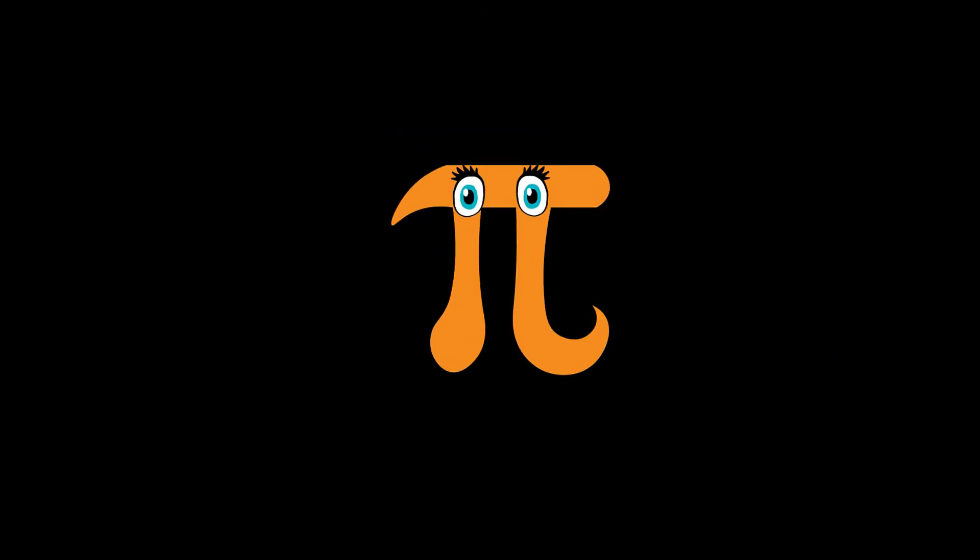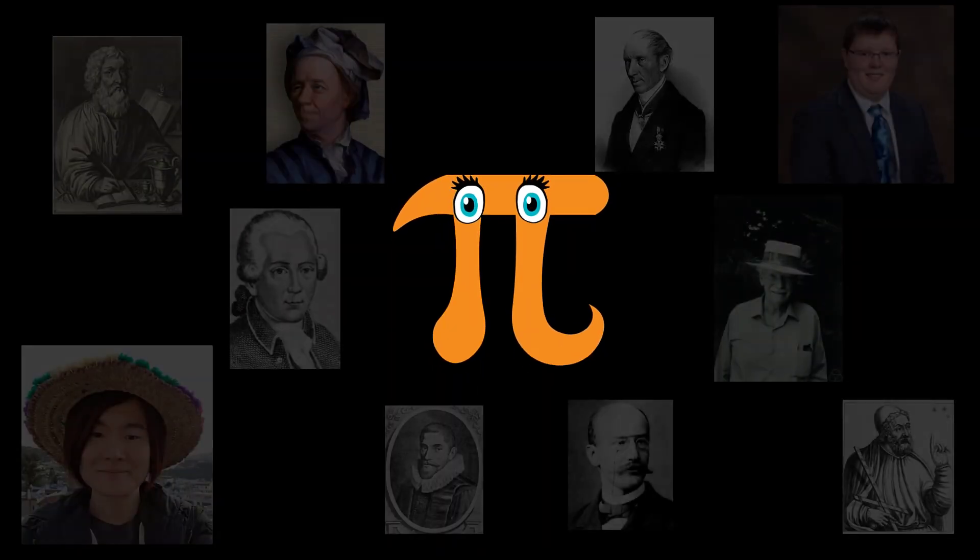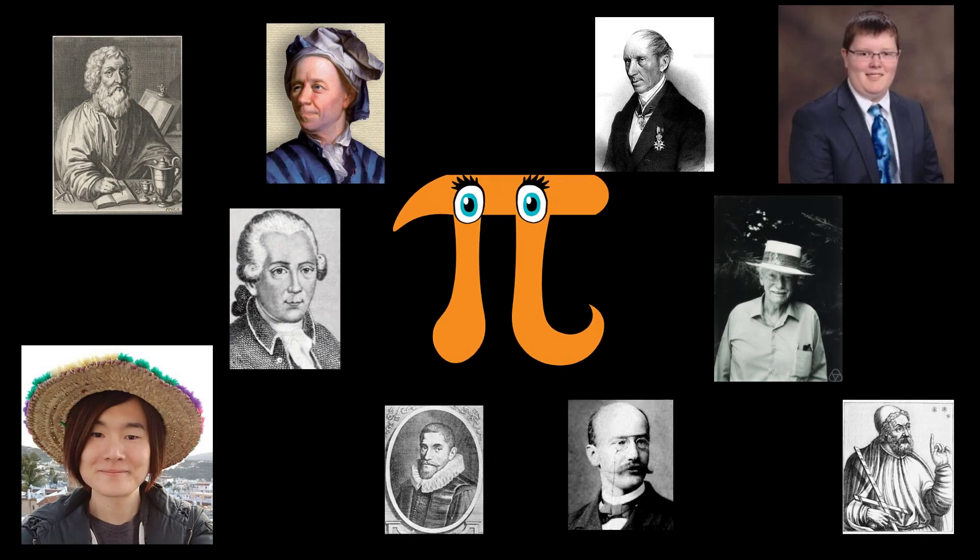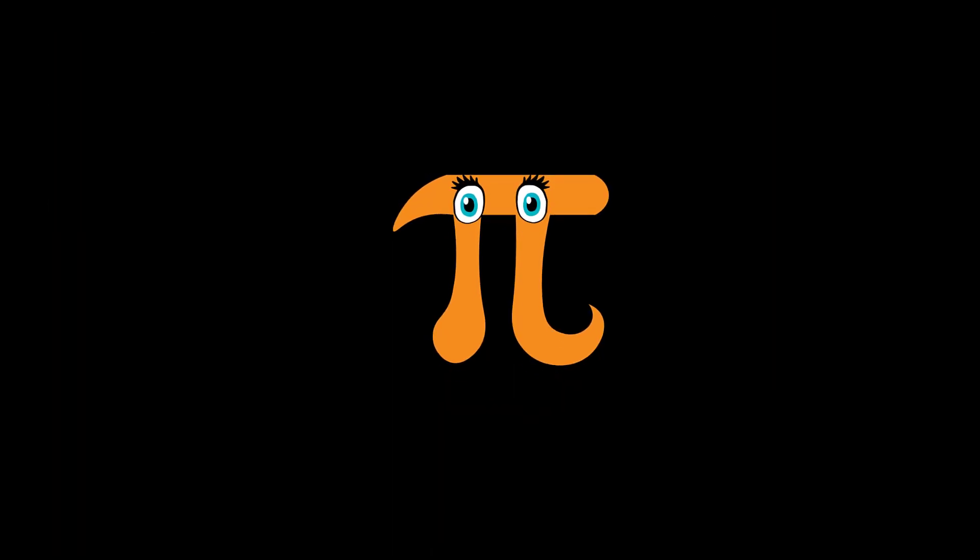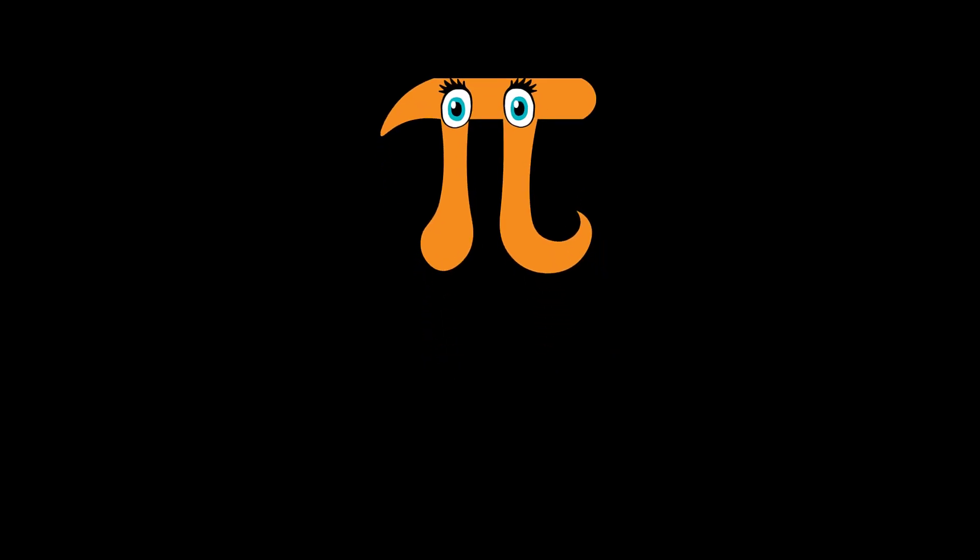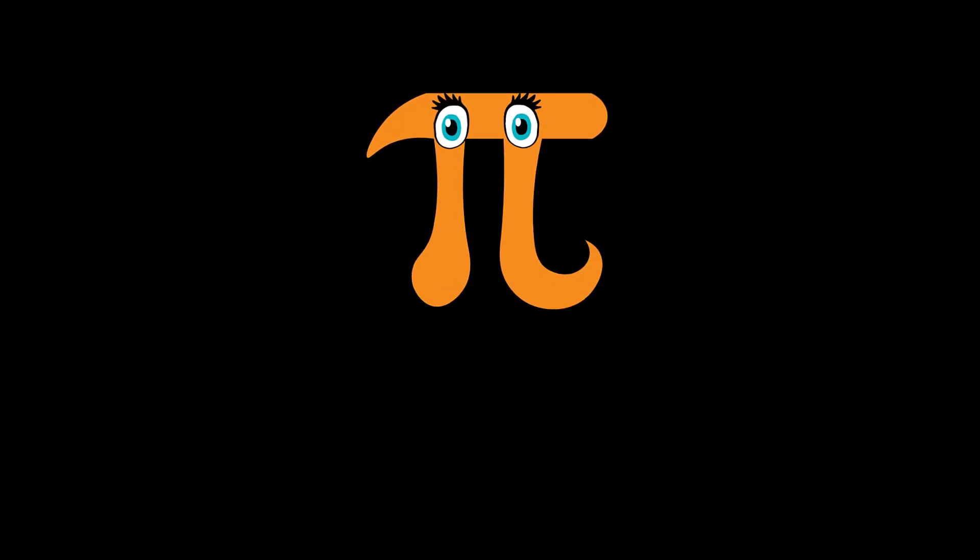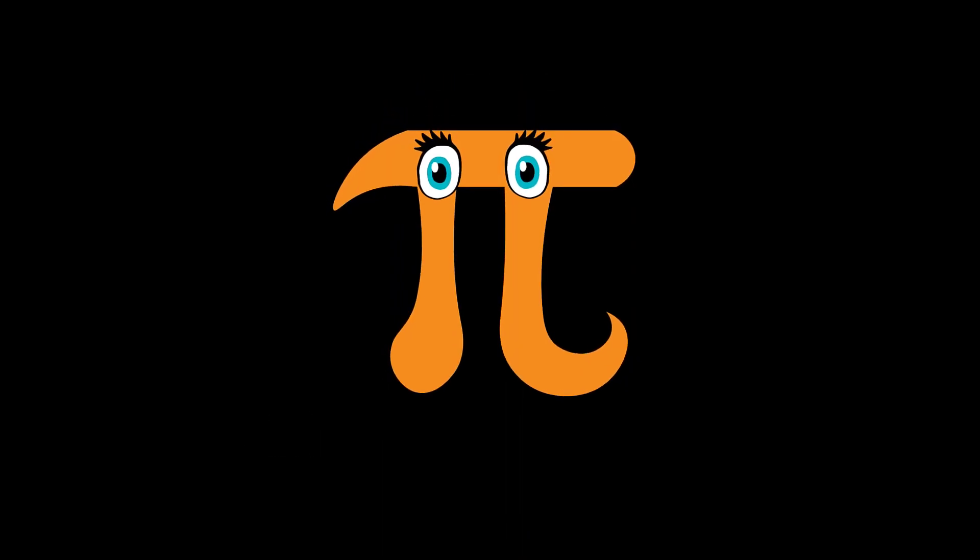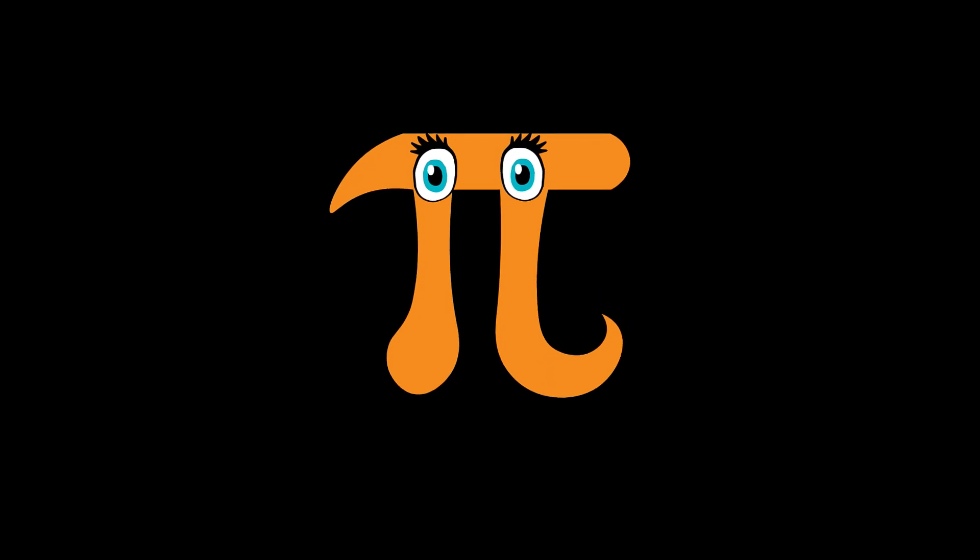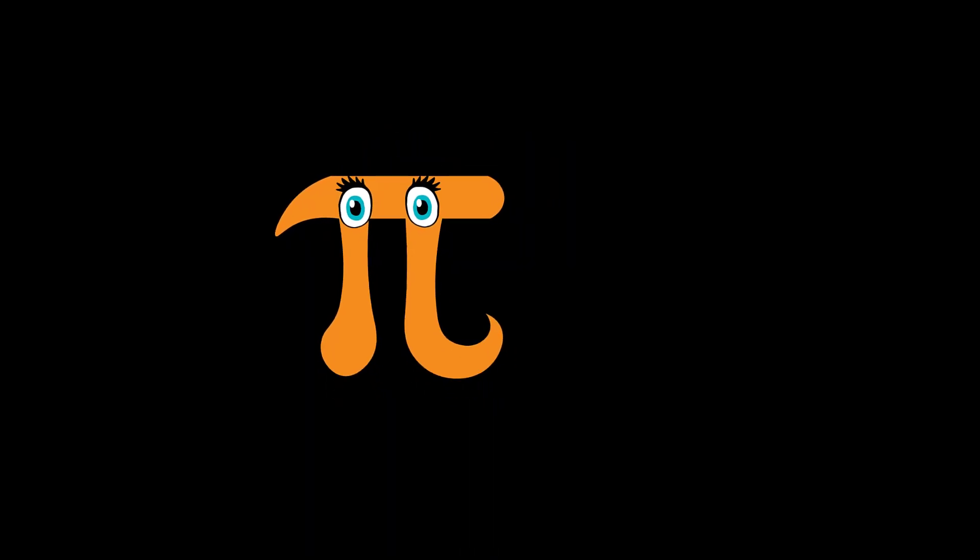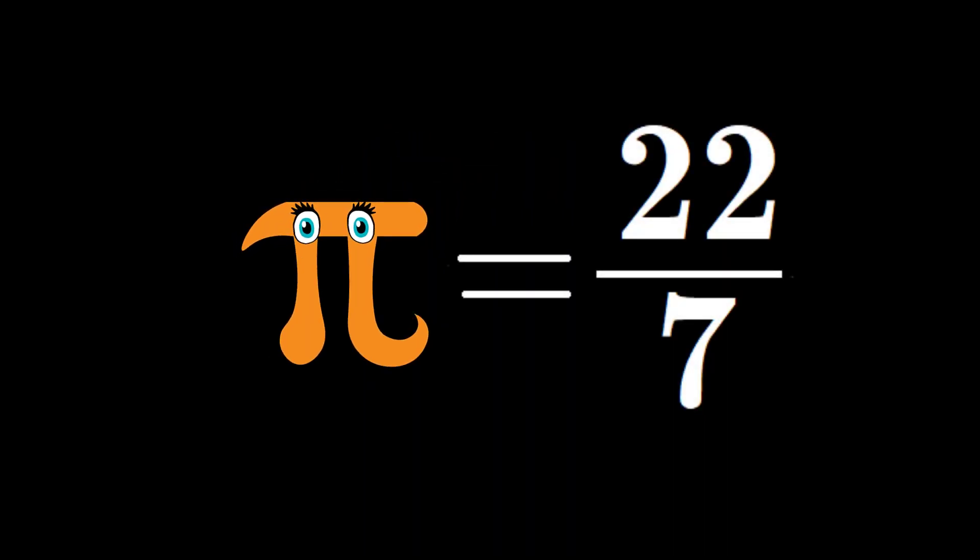There are certain ideas which run like scarlet threads through the fabric of mathematics. Each age finds its own particular interest in them and treats them in its own way. One of these is the number 3.1415926535 which has come to be designated by the Greek letter Pi. Perhaps it is more readily recognized in the rougher but simple approximation 22 by 7.